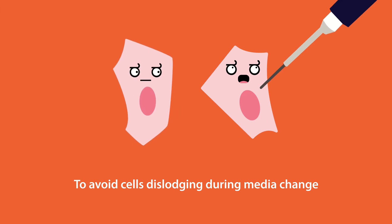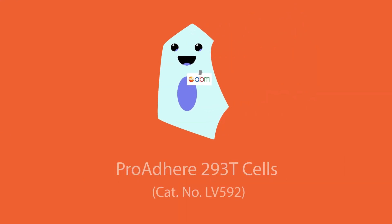To avoid cells dislodging during media change, we recommend using ABM's ProAdhere 293T cells for transfection.